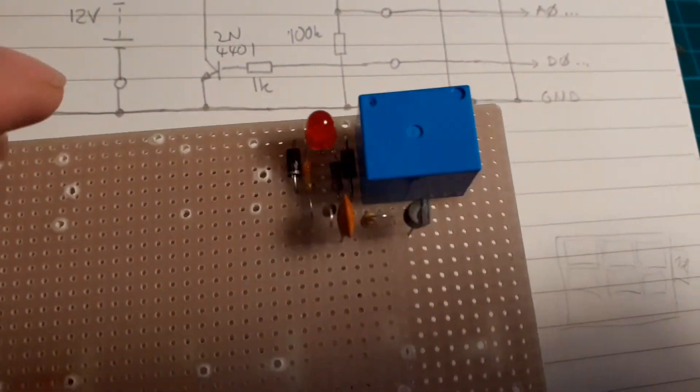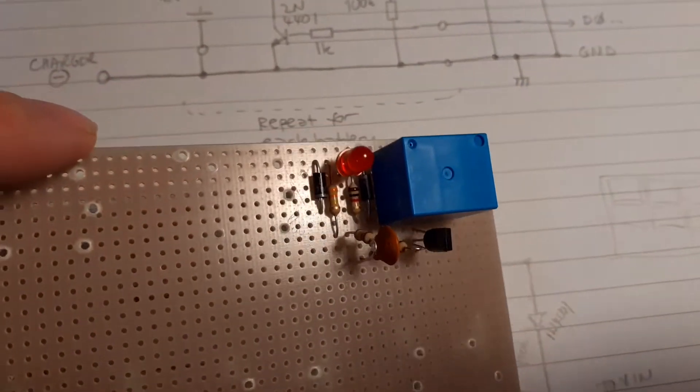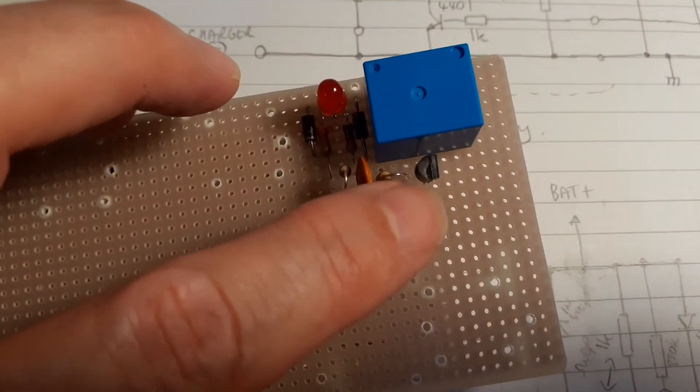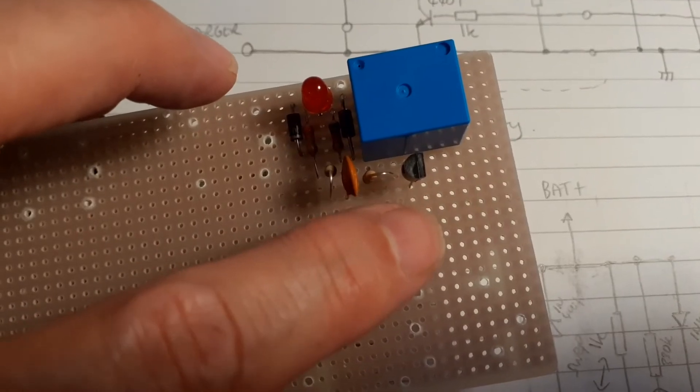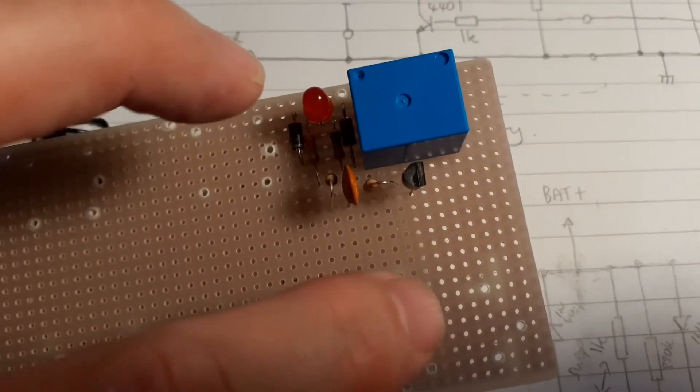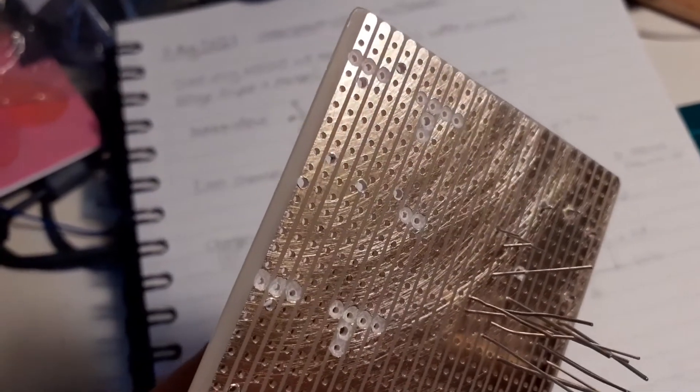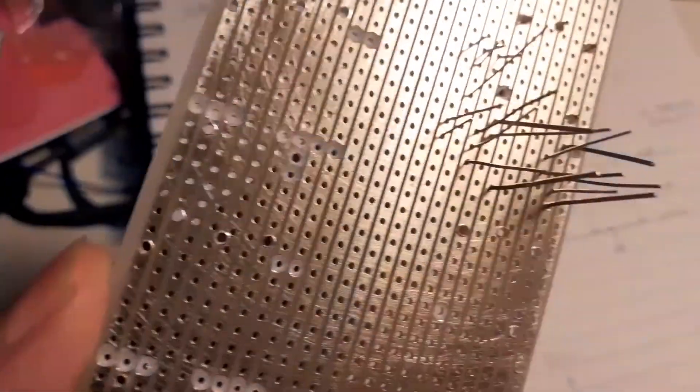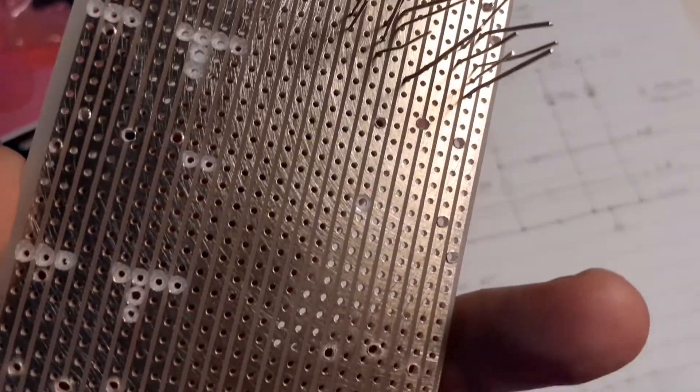The only real difference, so you can just see the components down there, the only real difference is that this transistor will have to be the opposite way around to the one over here. So all I really need to do now is cut away some of these tracks like I've done on this side and start soldering the components through.